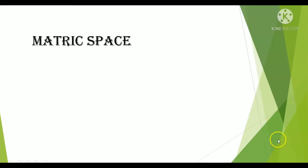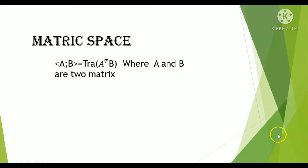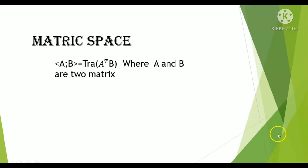For the matrix space: if A and B are two matrices, the inner product of A and B is defined as the trace of A transpose times B — that is, inner product of A, B equals trace(A^T B).